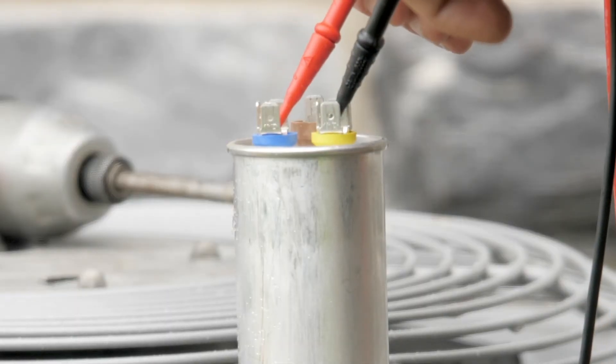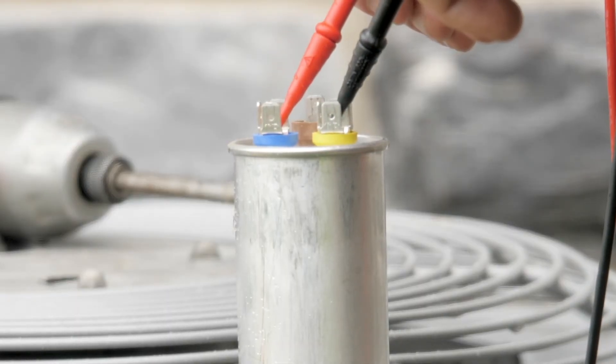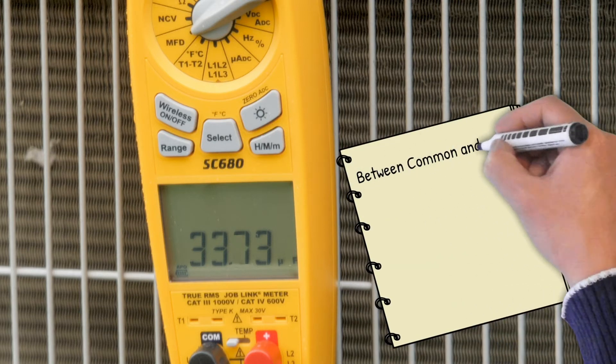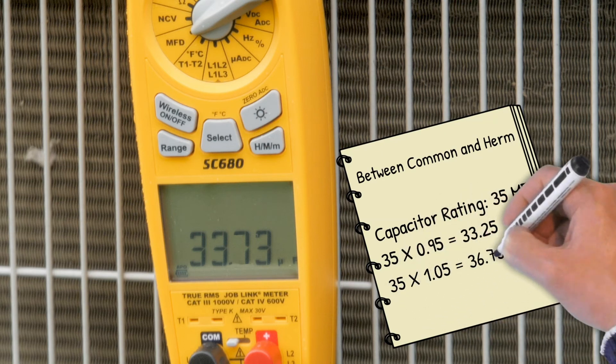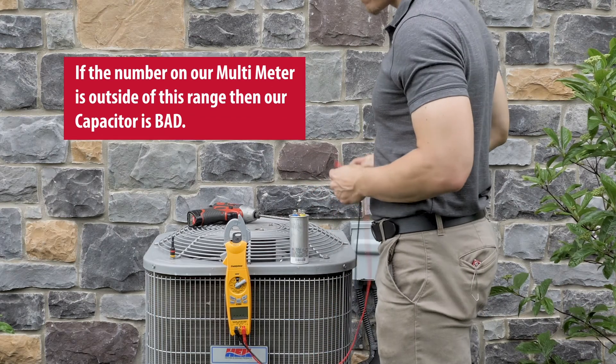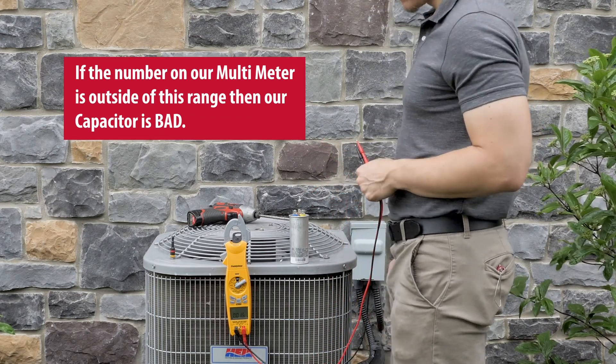Now we'll check the capacitor between the common and the Herm terminals. Again, we are multiplying our capacitor rating of 35 by 0.95 and 1.05. If the number on your meter is outside of this range, your capacitor is bad.